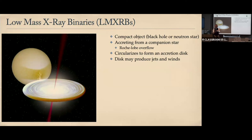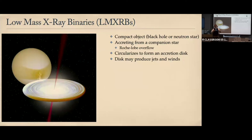I'm going to be focusing today specifically on black hole X-ray binaries. Accretion disks across nature seem to often be associated with jets — these narrow, fast outflows — and also often with winds, which are wider, slower outflows.